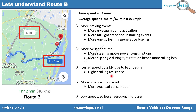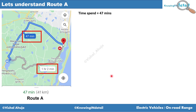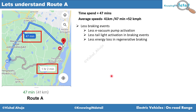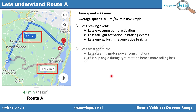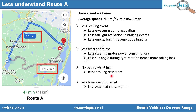Route A is essentially the reverse of this. Time span is 47 minutes, average speed is around 52 km/h. There are fewer braking events, so less vacuum pump activation, less brake light activation, and less energy lost in regenerative braking. Lower twists and turns mean less steering power consumption and lesser rolling resistance due to lower slip angle changes. Since it is expected to be a highway, road quality is better, reducing rolling resistance further. Since time spent is less, energy lost in aux load is also less. The one disadvantage is that higher speed means higher aerodynamic losses.